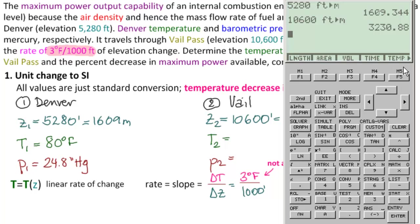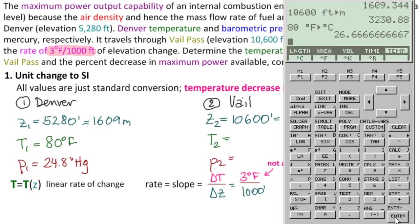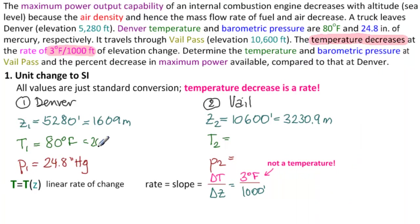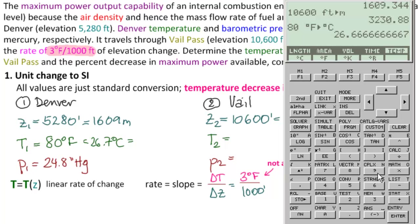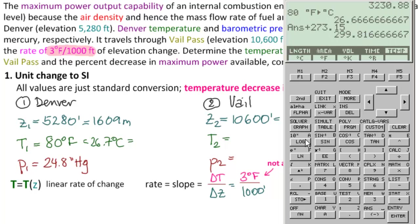For temperature, we convert 80 degrees Fahrenheit to Celsius using the Fahrenheit-to-Celsius function, which gives 26.7 degrees Celsius. Adding 273.15, that's 299.8 Kelvin.